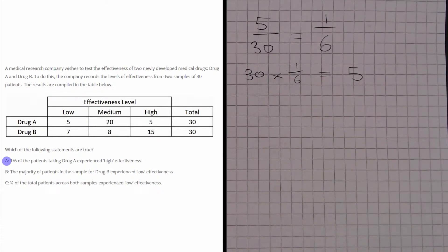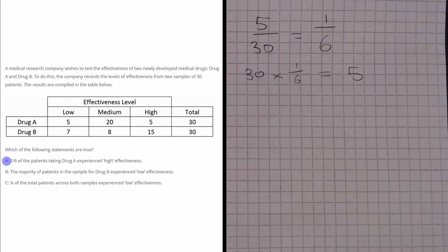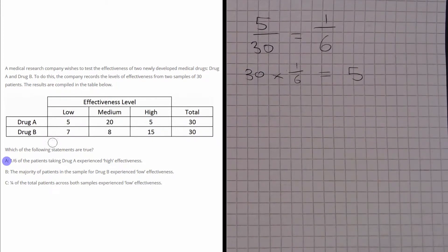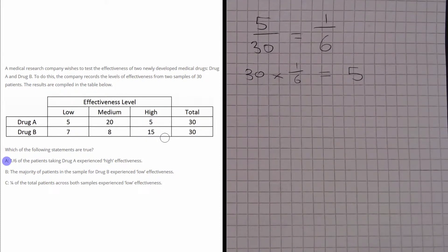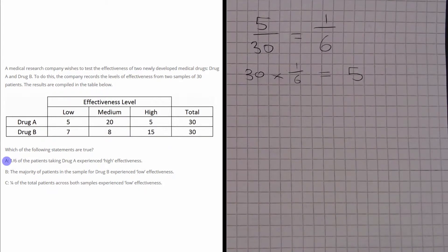Let's have a look at Part B. Part B says that the majority of patients in the sample for drug B experienced low effectiveness. We can see for drug B low effectiveness, we only had seven people there, whereas in medium and high, we had much higher numbers. So this question is obviously false.